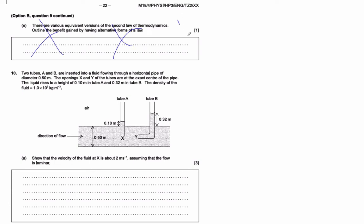All right, yeah. Obviously, that's the last part of a thermodynamics question. So let's do this one here. So two tubes are inserted into the fluid. Show that the velocity of the fluid at x is about 2 meters per second.